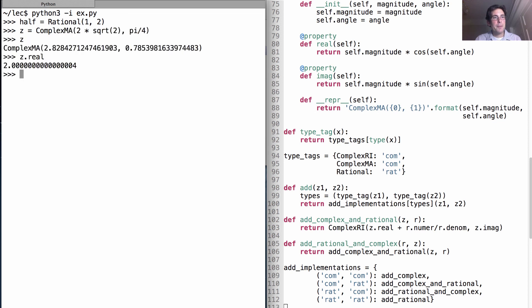So what is this z? Well, the real component is 2 and the imaginary component is 2 as well. So, what happens if we add half and z?